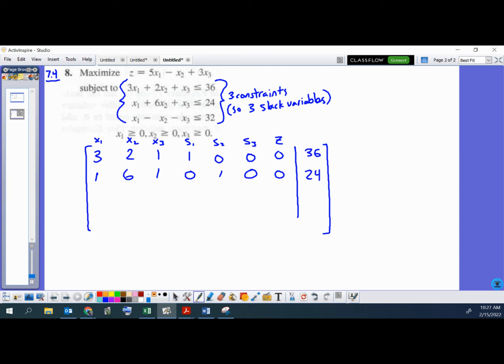And then we're going to do the same thing with the third one. 1, negative 1, negative 1. And then 0, 0, 1. We're including s3 in this one. 0 for z again. And this one's 32.